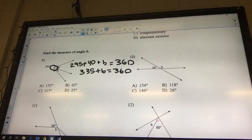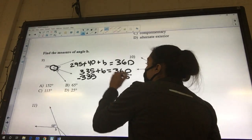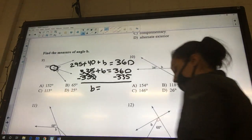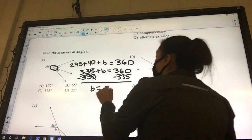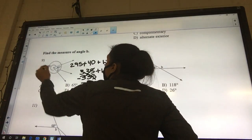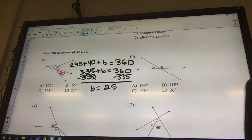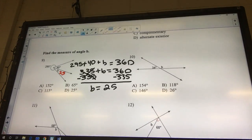Now what can we do? What are we trying to find? So subtract 335. So our b should equal 25. And if we look at our circle and I put 25 right here where the b is, and I take that 295 plus that 40 plus that 25, I should get 360, which is a full circle. So your answer is going to be 25.